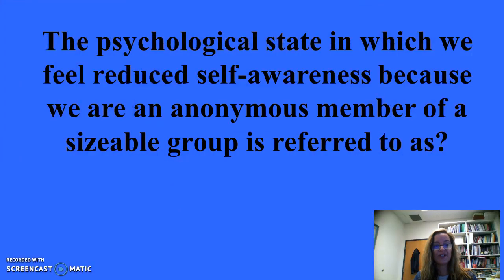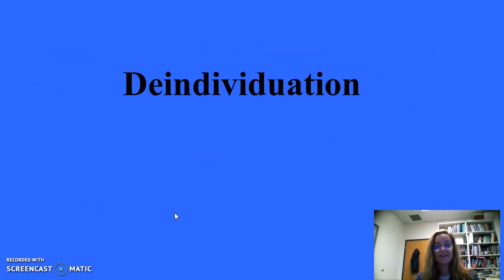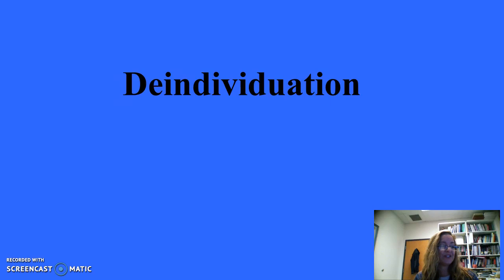For 500: The psychological state in which we feel reduced self-awareness because we are an anonymous member of a sizable group is referred to as de-individuation. We may lose our individuality and engage in uninhibited behavior we wouldn't see if alone or in a small group — like hooliganism, a negative stereotype about how people behave in crowds at sporting events, especially applied to incidents involving England's soccer fans.